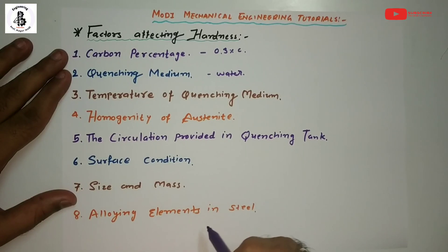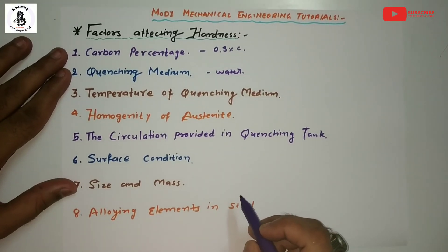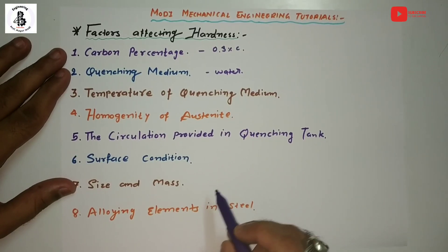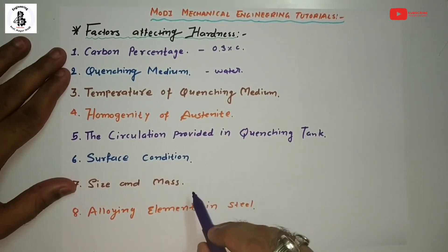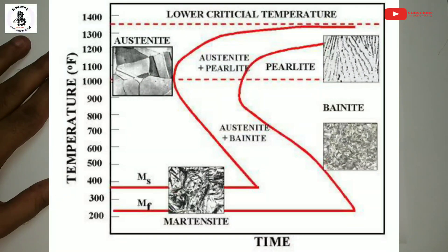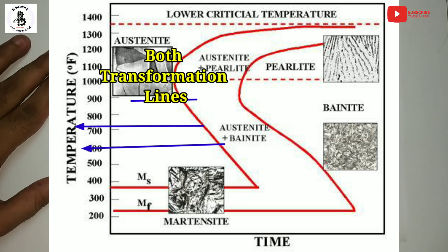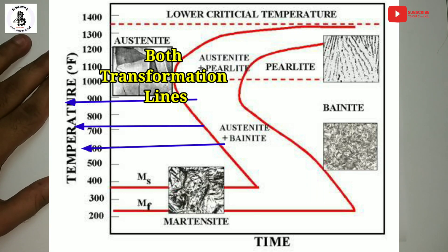Eighth factor: alloying elements in steels. Except for cobalt, all alloying elements shift the TTT curves towards the right side. As you can see in the TTT diagram, adding alloying elements to the steel structure shifts those transformation lines to the right. As a result, the critical cooling rate required to form martensite is reduced, and sometimes martensite can be produced by air cooling alone.